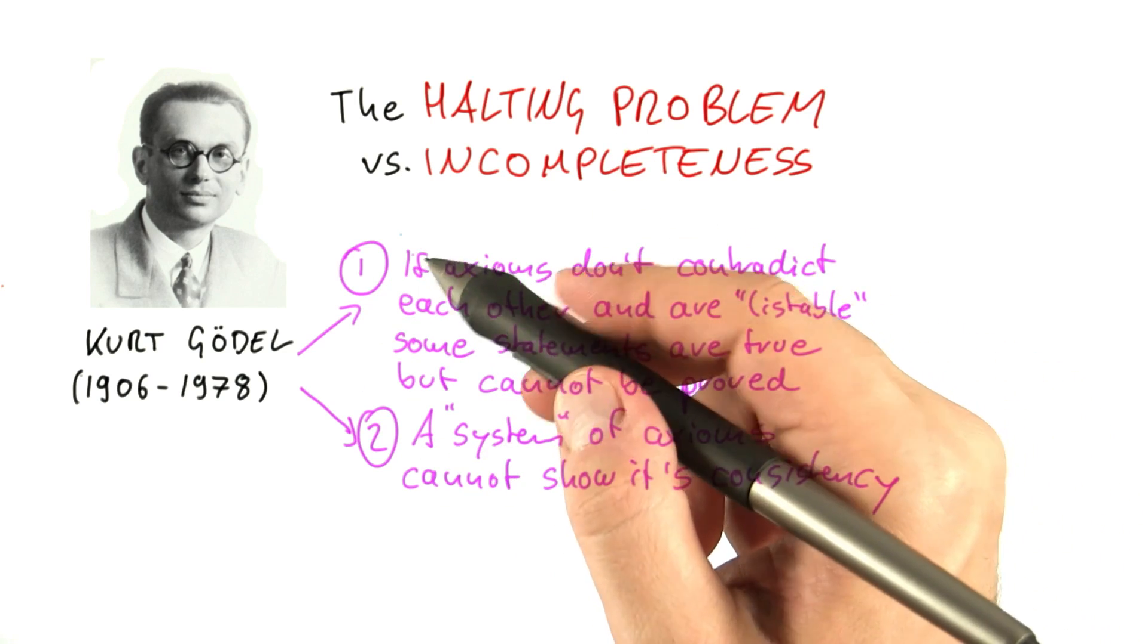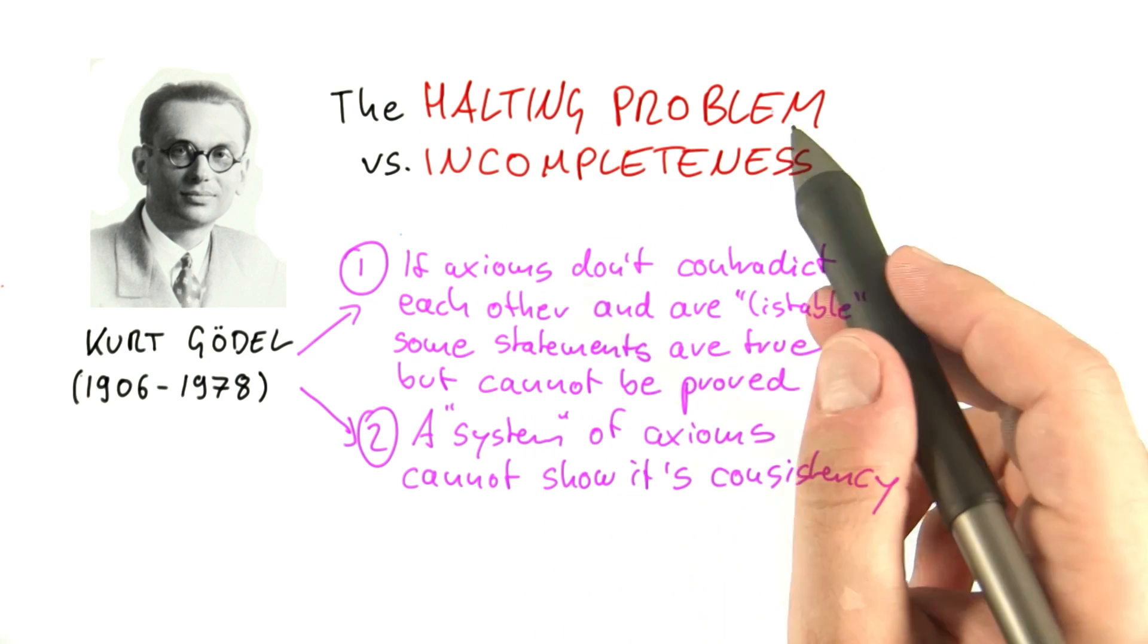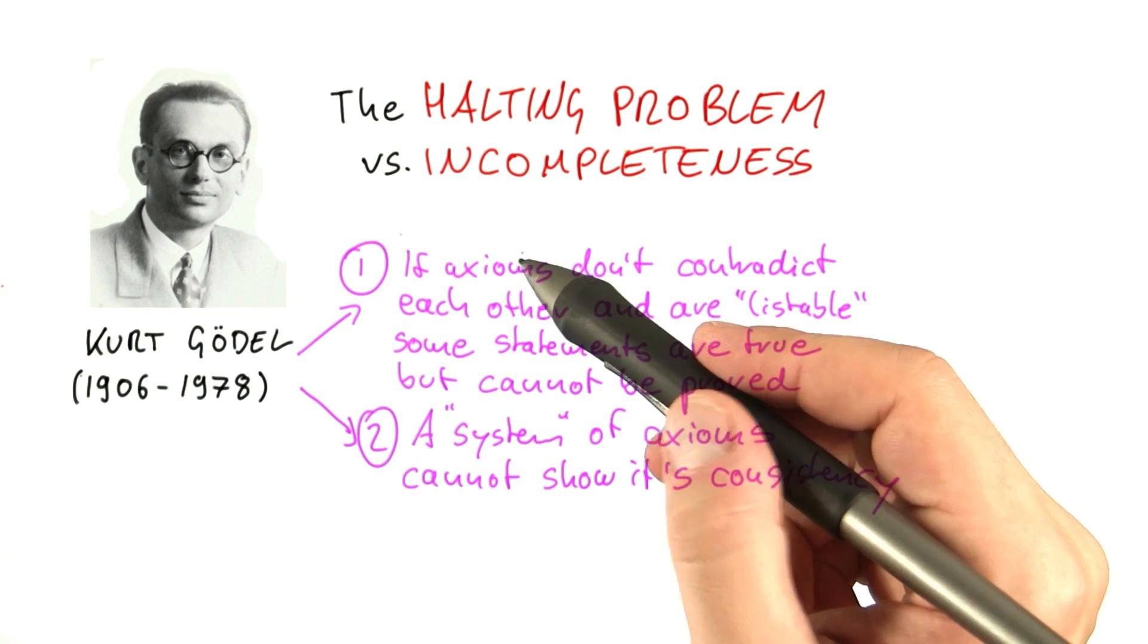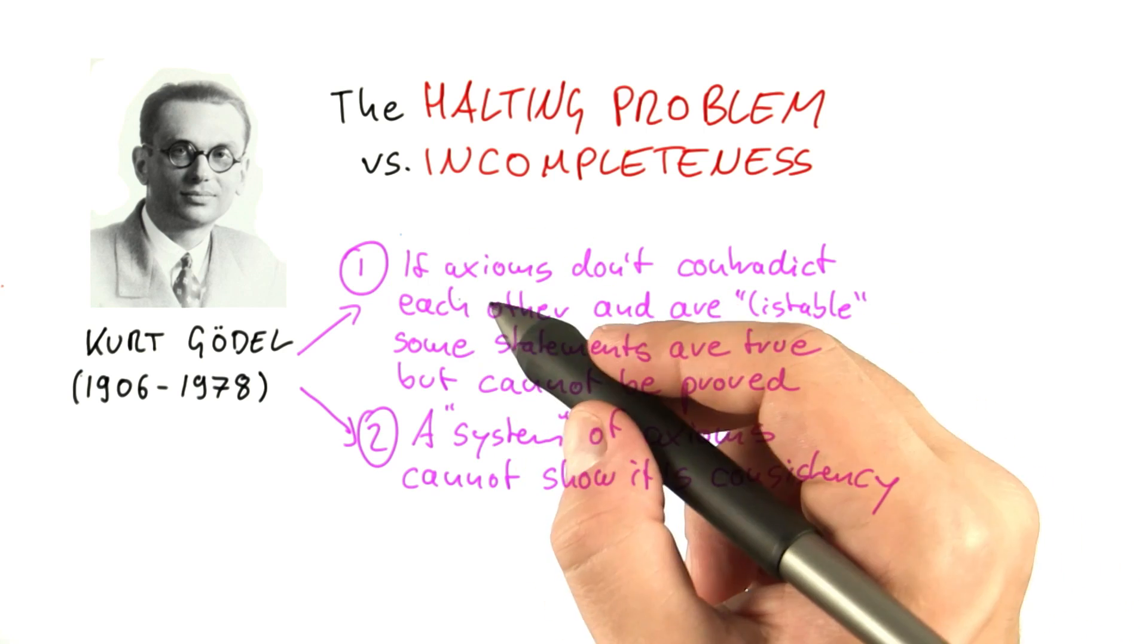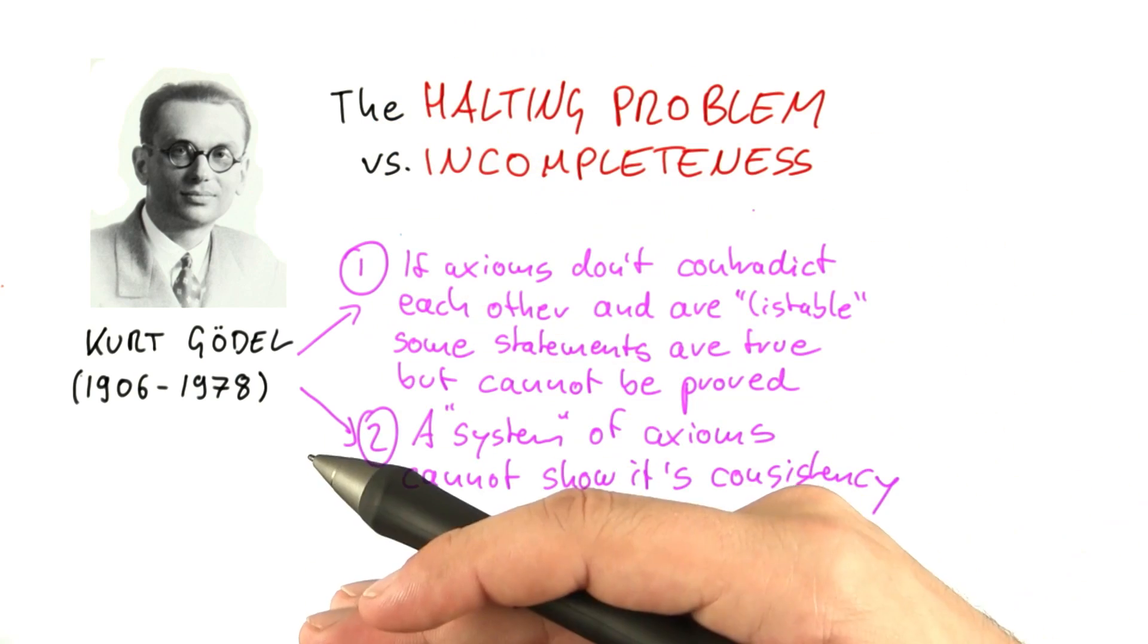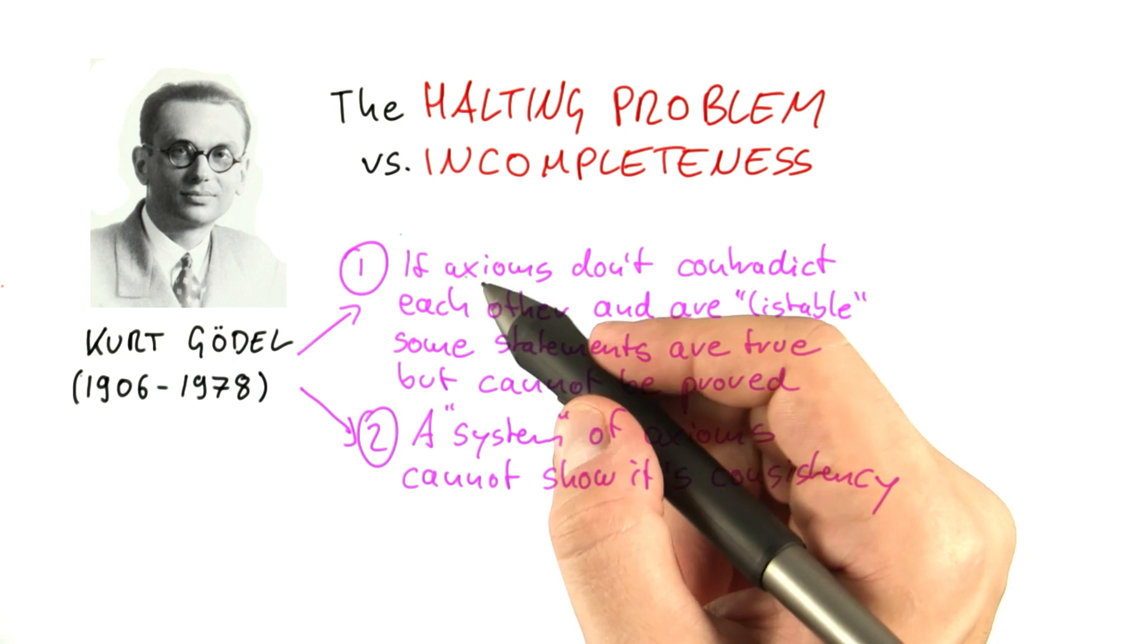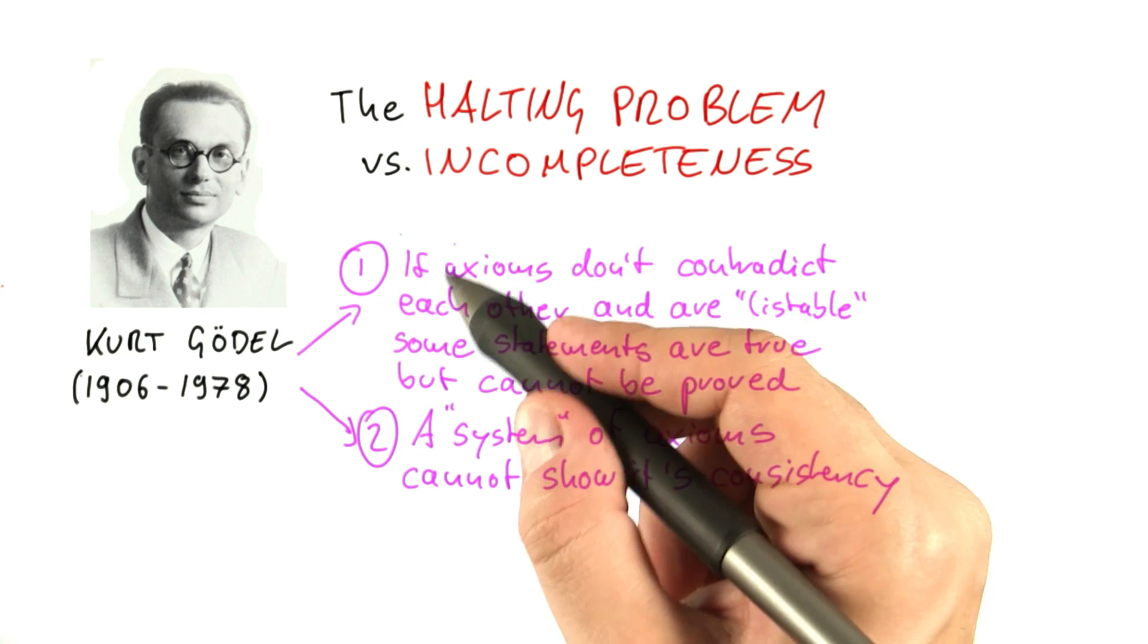And these two statements are in a way very similar to the halting problem and undecidability. The axioms, you could think of those as programming statements. So any program or algorithm is composed of a number of simple instructions that are then arranged. And of course, there's an infinite number of possible computer programs that you can write. But they are made up of a finite set of building blocks.